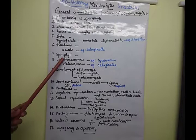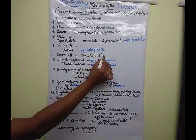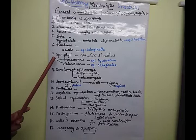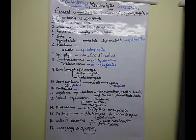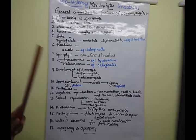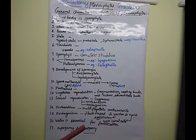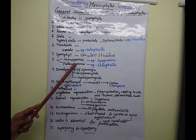Pteridophyte members produce two types of spores: homosporous condition and heterosporous condition. Homosporous means only one type of spore is produced. Heterosporous means two different types of spores are produced. The example for homosporous condition is ferns, and for heterosporous condition the example is Selaginella.